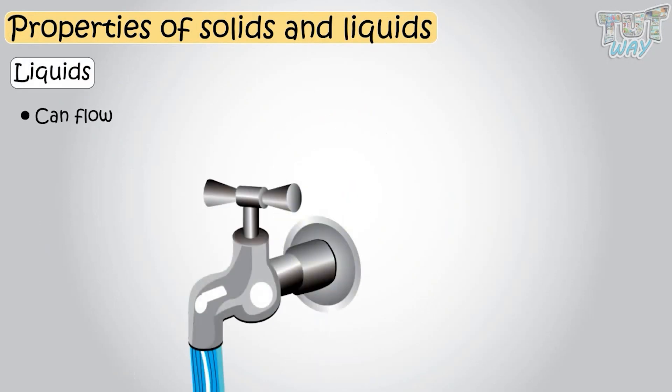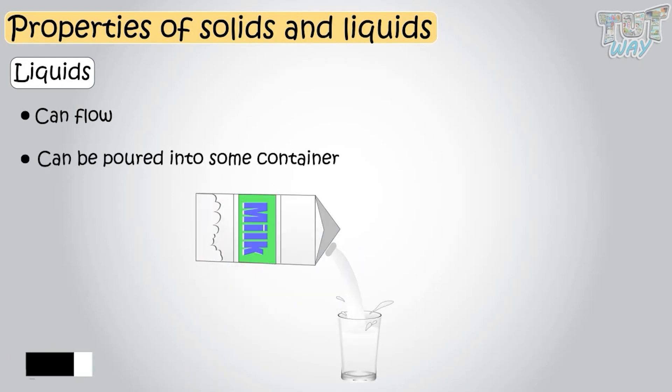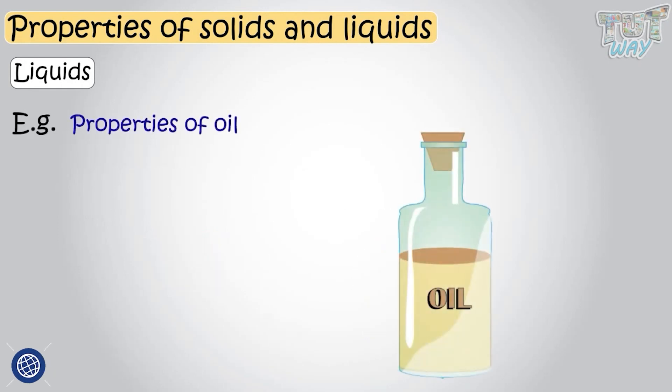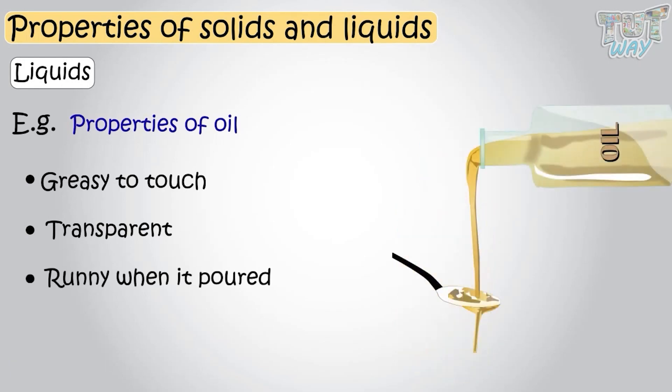Liquids can flow. Liquids can be poured into some container. Liquids take the shape of a container it is poured into. There can be more properties of different liquids. Like oils are liquids and they are greasy to touch. Oils are transparent, that is easy to see through or clear, and also runny when it pours.